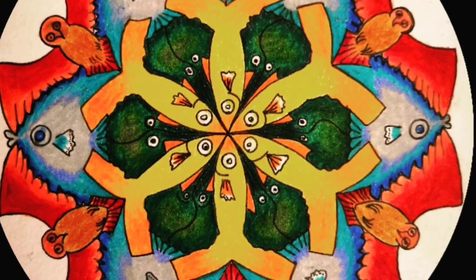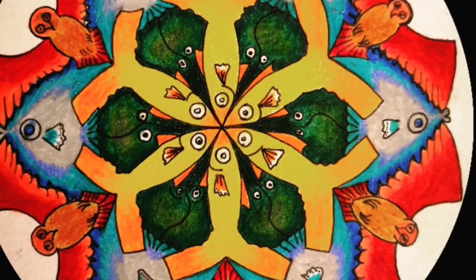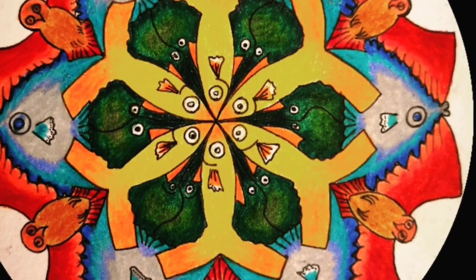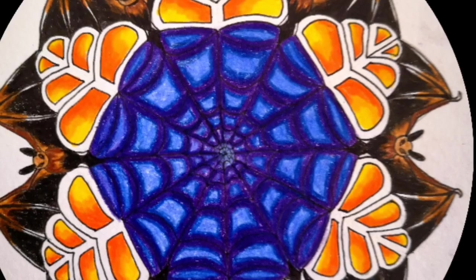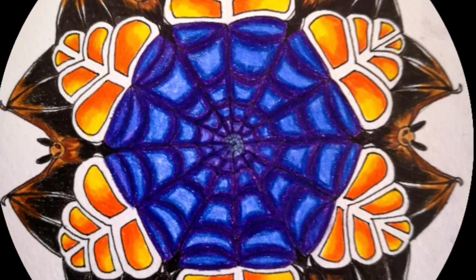Although it looks like a flower, this geometric pattern is made up of tessellated creatures and shapes. Here's another made of bats, pumpkins and a spider web.